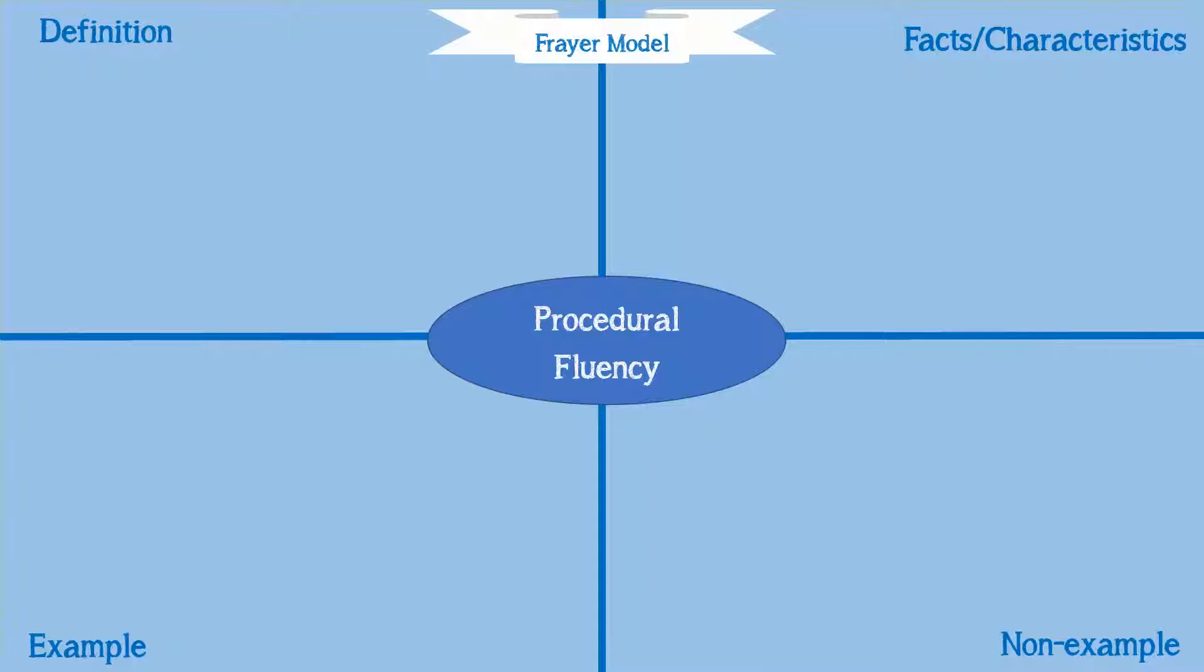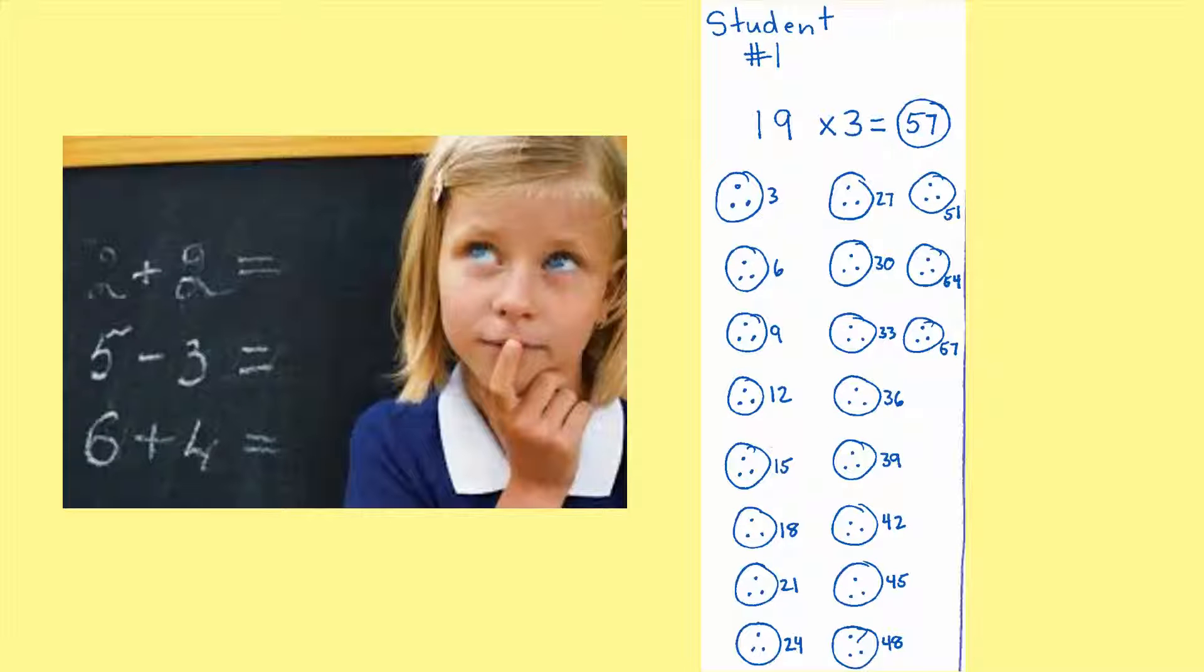We're going to use the Frayer model to help us understand what procedural fluency means. So let's take a look at a few students' work and think about whether they have reached that automaticity, that level of procedural fluency. Look at student number one and think about whether you would consider this a fluent student, a student who's fluent with their math facts.